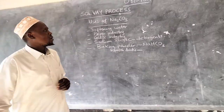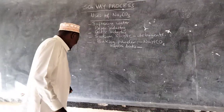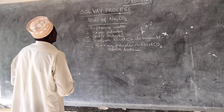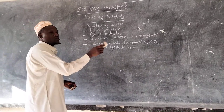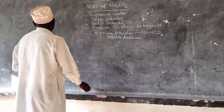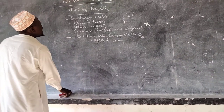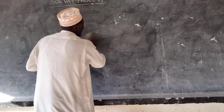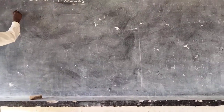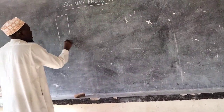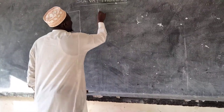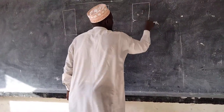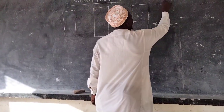Now that we know the uses of sodium carbonate, it is important that we learn the Solvay process — the process used to manufacture sodium carbonate. This process usually takes place in stages, and we have four main components, which you can call towers.